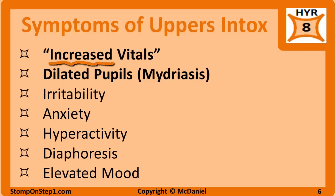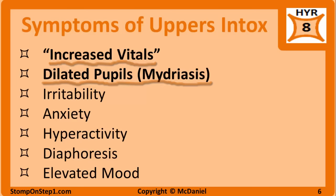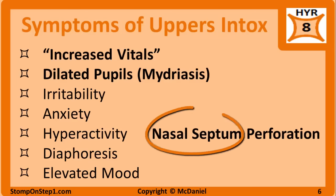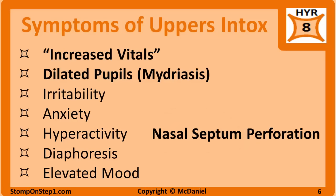Symptoms of stimulant use include increased vitals — tachycardia, hypertension, increased temperature, and/or respirations — pupillary dilation, irritability, anxiety, hyperactivity, diaphoresis or sweating, and elevated mood. Nasal septum ulceration or perforation and nasal mucosal atrophy is a result of nasal constriction in individuals who snort cocaine. This is another buzzword you should keep an eye out for since it commonly shows up on exams. Accelerated tooth decay and tooth loss is seen more commonly in users of meth and is sometimes referred to as meth mouth.